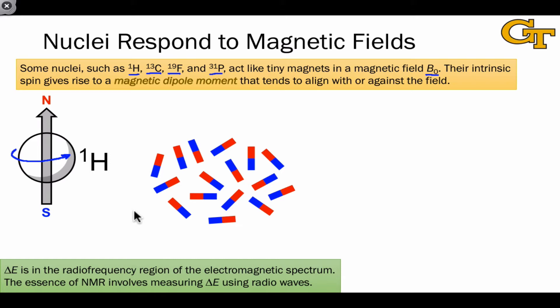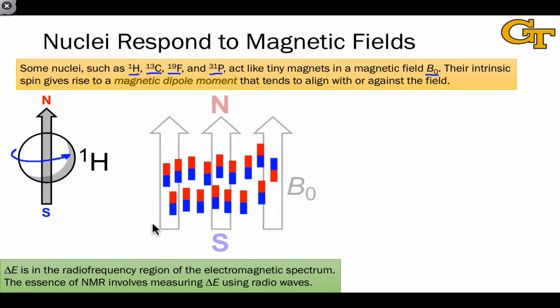And because the nuclei act like they're spinning—this isn't exactly what happens, but it's a nice analogy that we can draw—they have a magnetic dipole moment that tends to align with or against the field. So in the absence of a magnetic field, these dipoles are distributed randomly. When we apply the field, there's a tendency of the nuclei to either align with the field or against it.